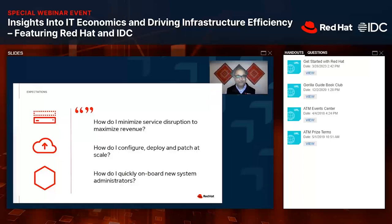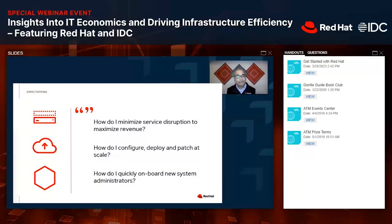CIOs today face an even greater challenge to scale their IT infrastructure to meet business needs in a cost-effective way. The pace of business continues to speed up, but budgets remain stagnant. We'd like to share three real-world scenarios where customers leveraged a multiplier from using several Red Hat solutions together — answering questions like: how do I minimize service disruption to maximize revenue? How do I configure at scale? And how do I onboard new system administrators with the least overhead?